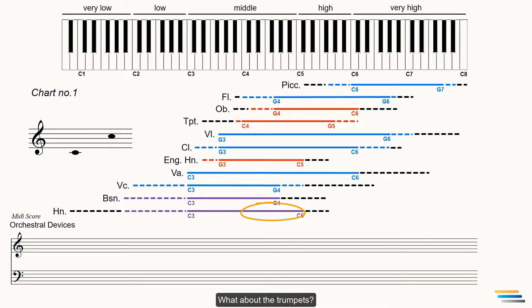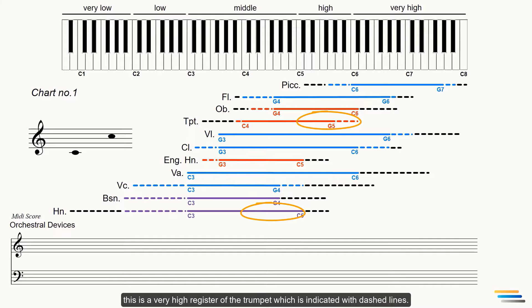What about the trumpets? If I double the horns an octave higher, trumpets will be between C5 and C6. As you can see, this is a very high register of the trumpet, which is indicated with dashed lines.